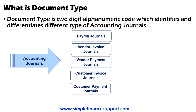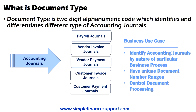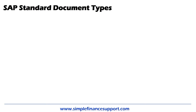Before going further, let's look at what is the use case for a document type. In general, you have a lot of different types of business processes that you perform in a company — for example, payroll journals, vendor invoices, vendor payments, customer invoices, and customer payments. These are just examples. The use case is identifying accounting journals by the nature of a particular business process, having a unique document type number range, and having certain control functions at the time of processing a document.